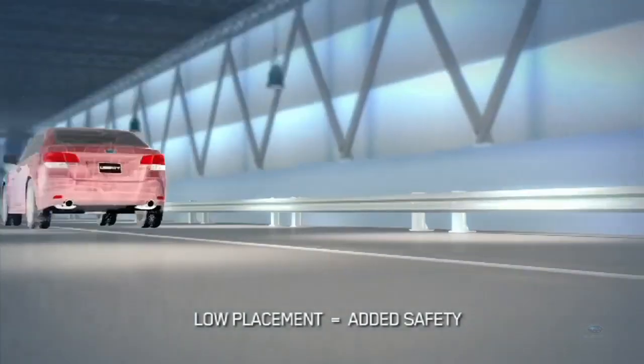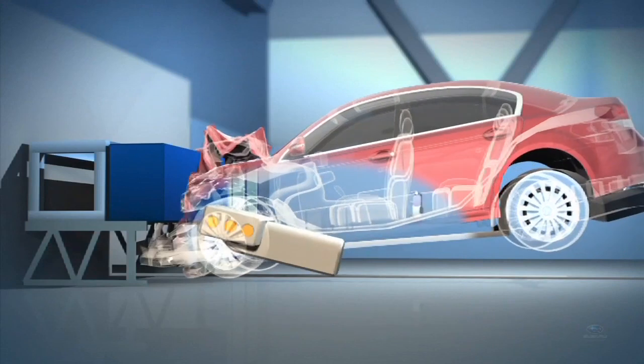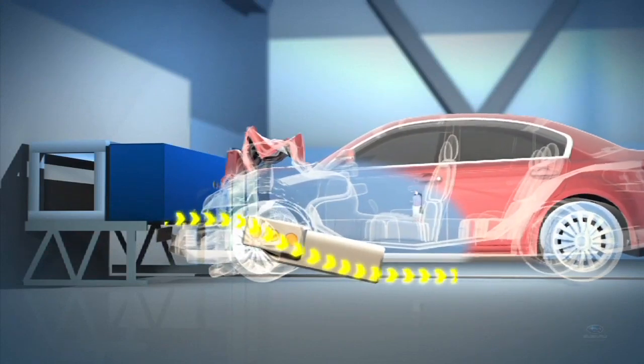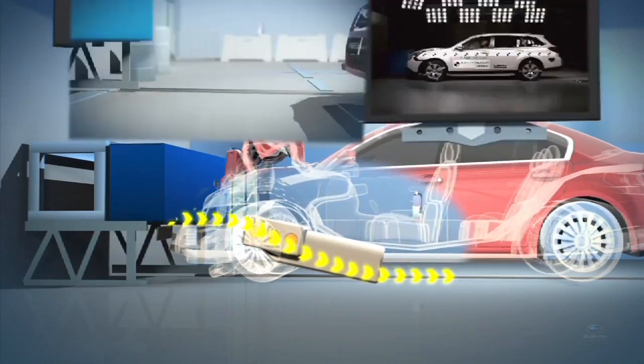With its flat design and low profile, the Subaru Boxer engine is also designed to submarine under the passenger cell in the event of a frontal collision.